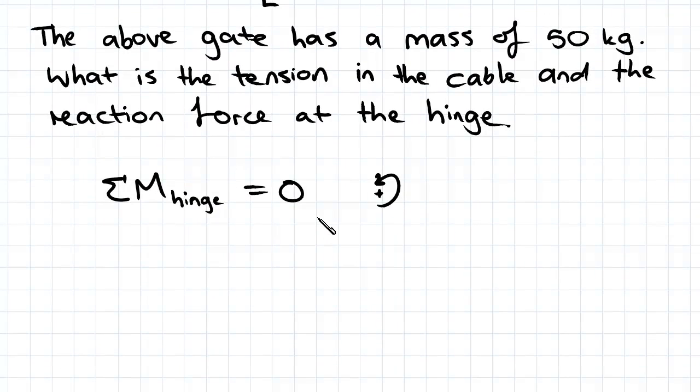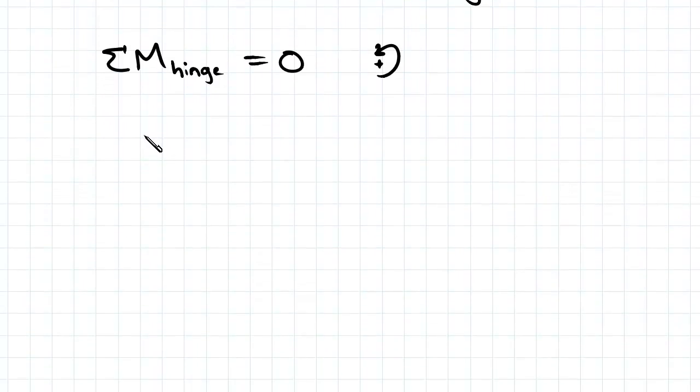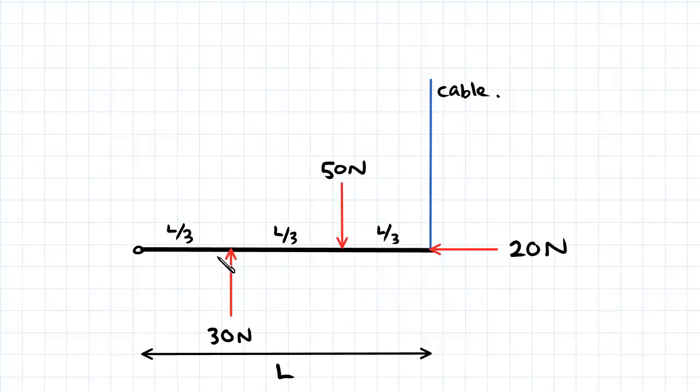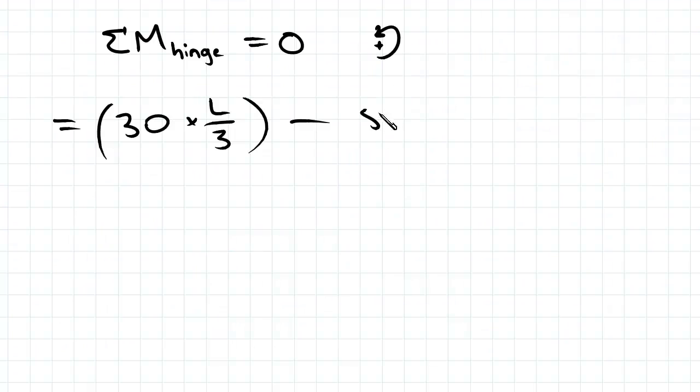The moment at the hinge will be equal to zero. So sum of moments around the hinge equals zero. We'll go ahead and do that. That will equal 30 times L on 3, so that's force times distance which is the definition of a moment. And we've got 50 times 2L on 3.